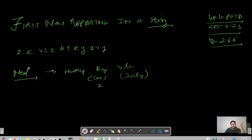Let's start with storing the frequency. How many times does Z appear? One, two, three — so Z has count three. X has count one, two — so X frequency is two. V has also occurred twice. Then there is C — C appears for the first time, so frequency one. Z we have already covered — Z's frequency is three.